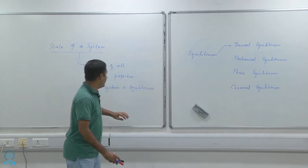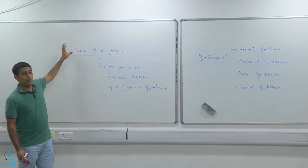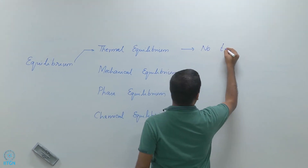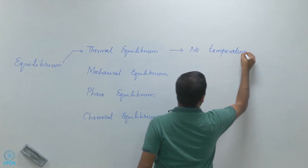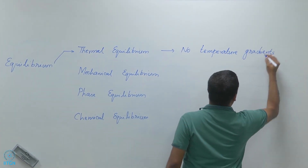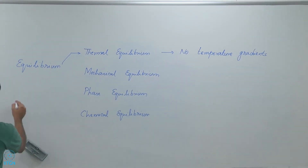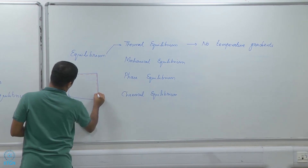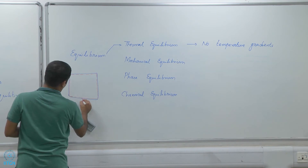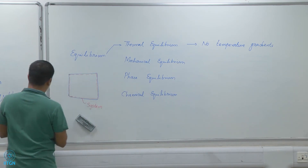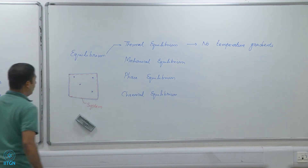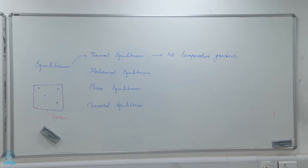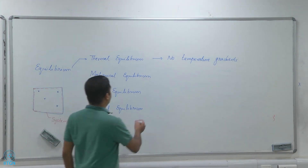Because the system is not in equilibrium, we cannot define the state of the system, since the state is only defined for a system in equilibrium. Thermal equilibrium means there are no temperature gradients — the temperature everywhere in the system is the same. If I take the temperature here, here, and here, all of these temperatures are equal — it is a uniform temperature everywhere.